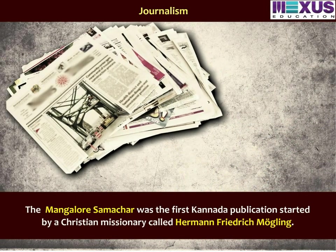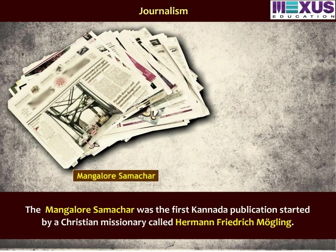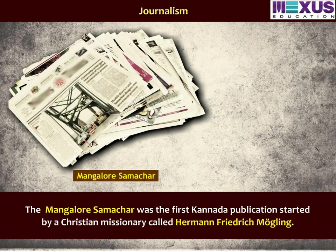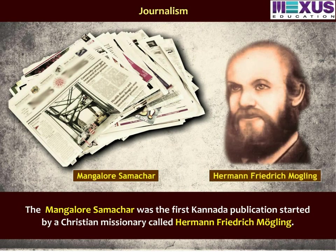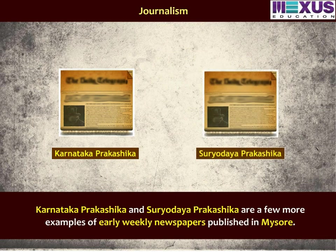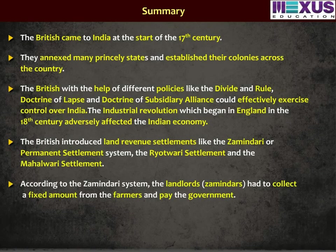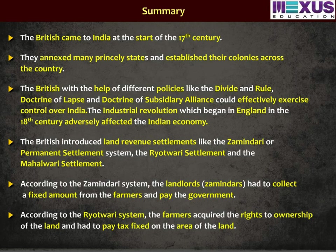The first Kannada publication, Mangalore Samachar, was started by a Christian missionary called Herman Frederick Mogling. Karnataka Prakashika and Suryoday Prakashika are a few more examples of early weekly newspapers published in Mysore. Let us now recap all the important points covered in this module on the effects of British rule in India.